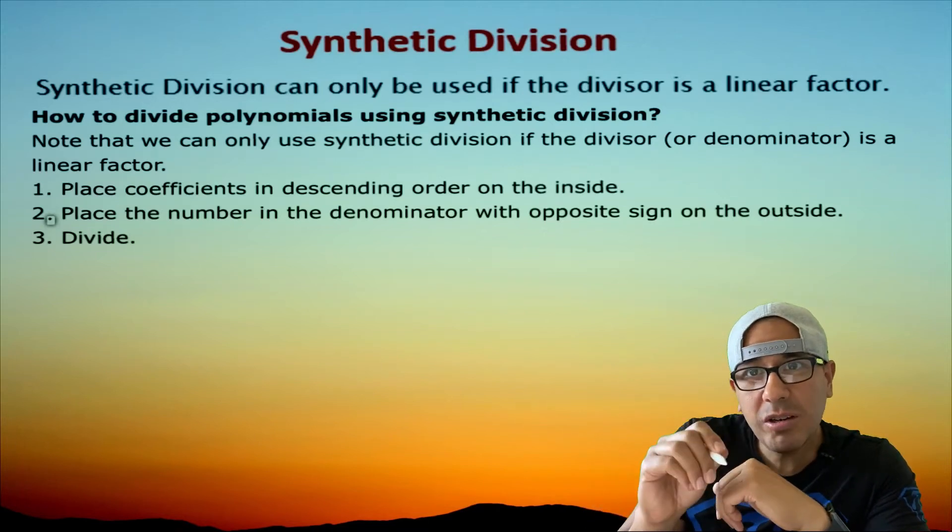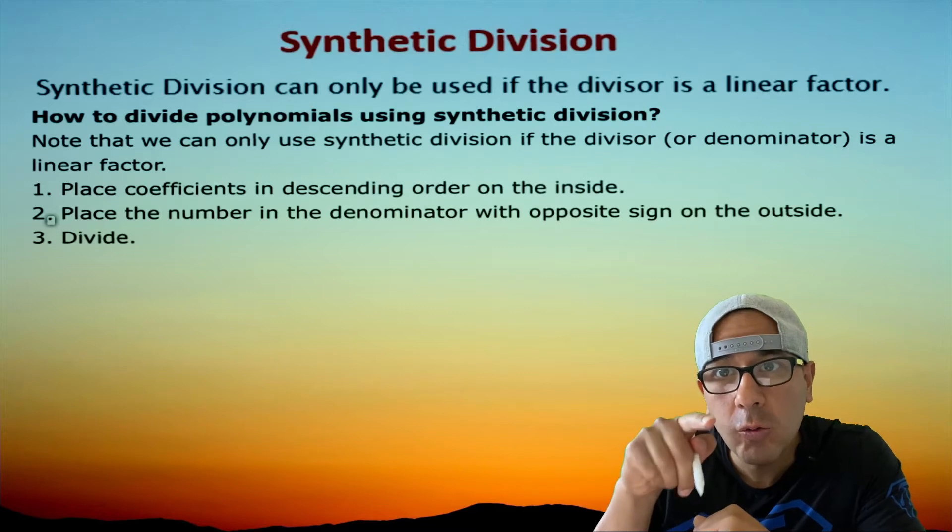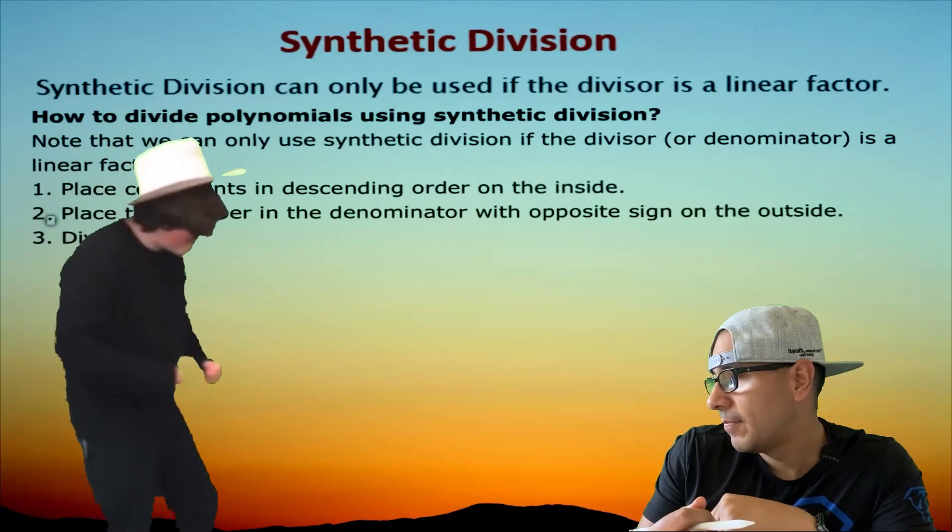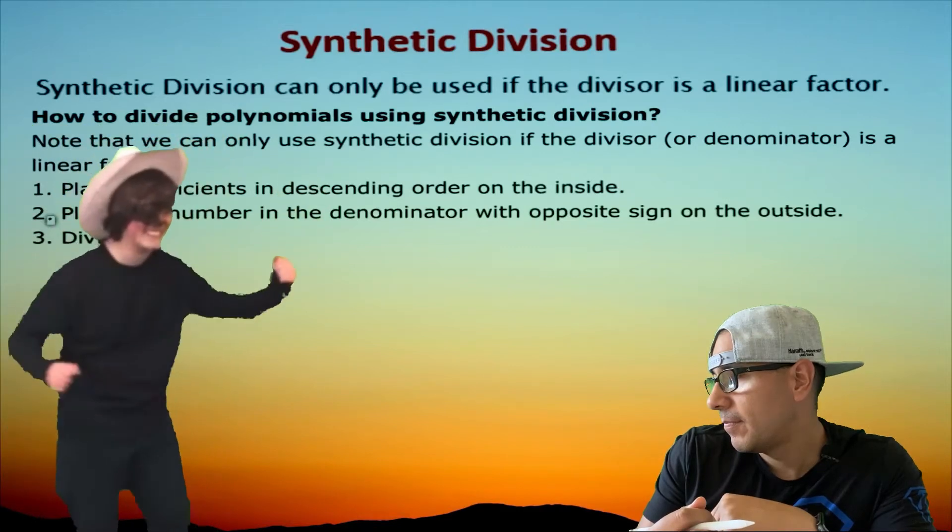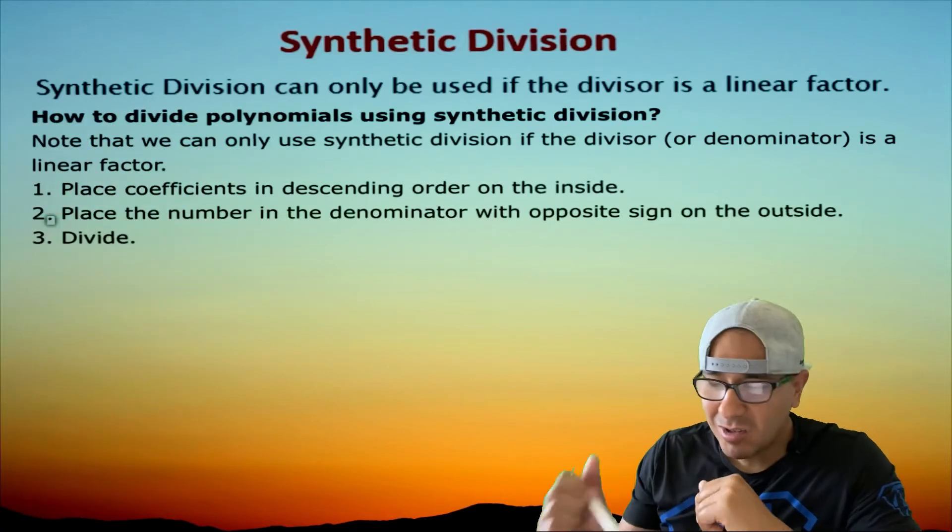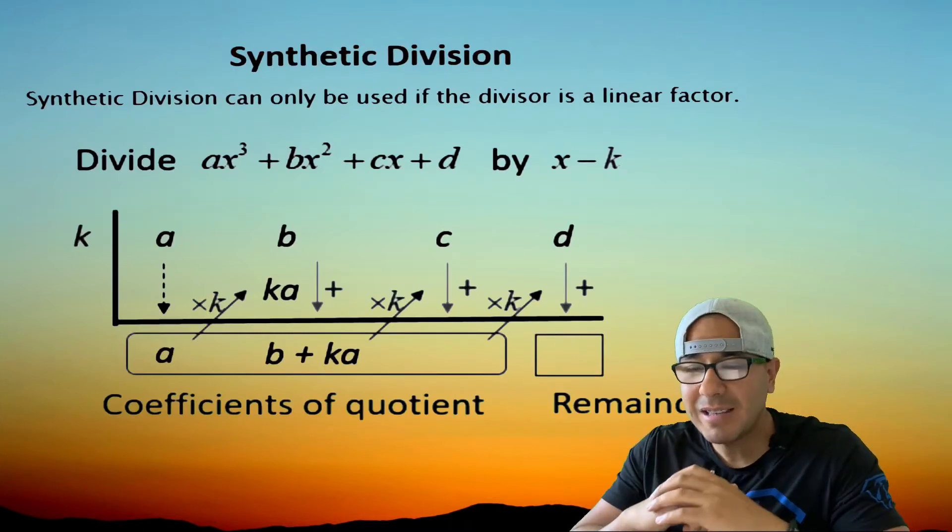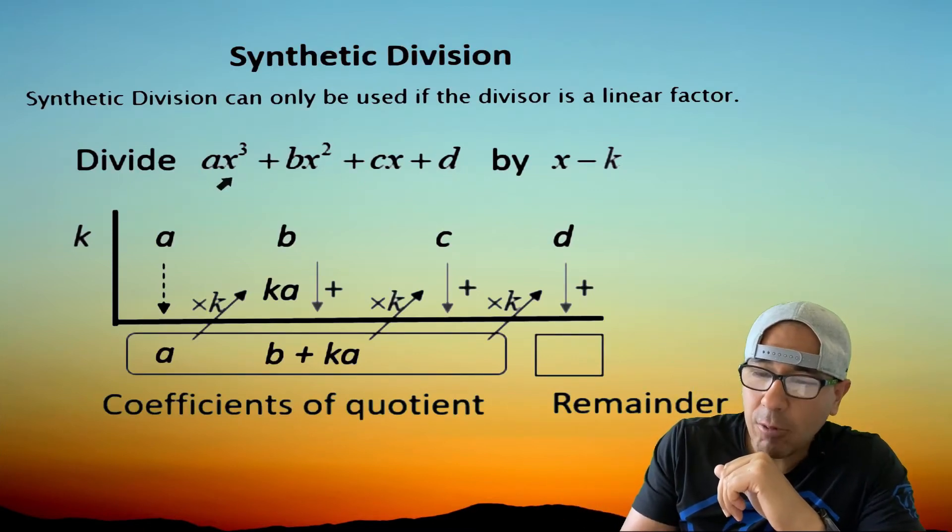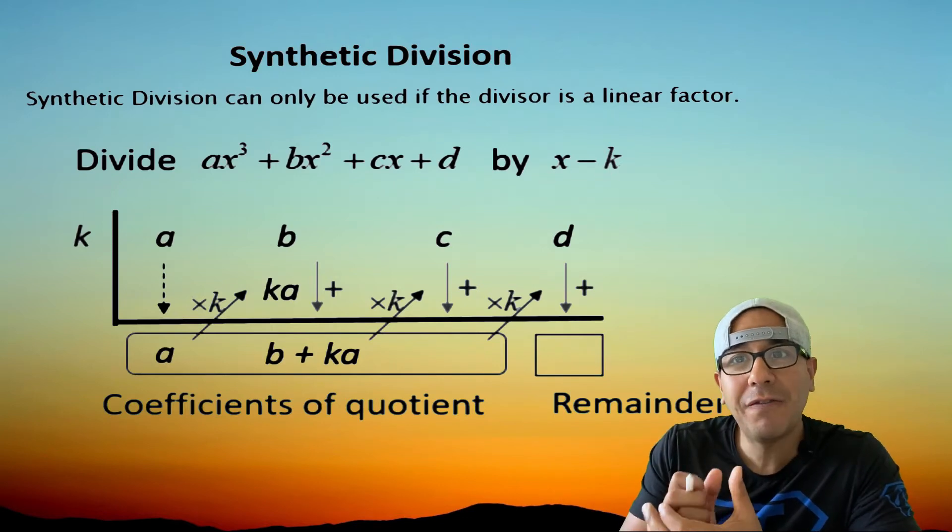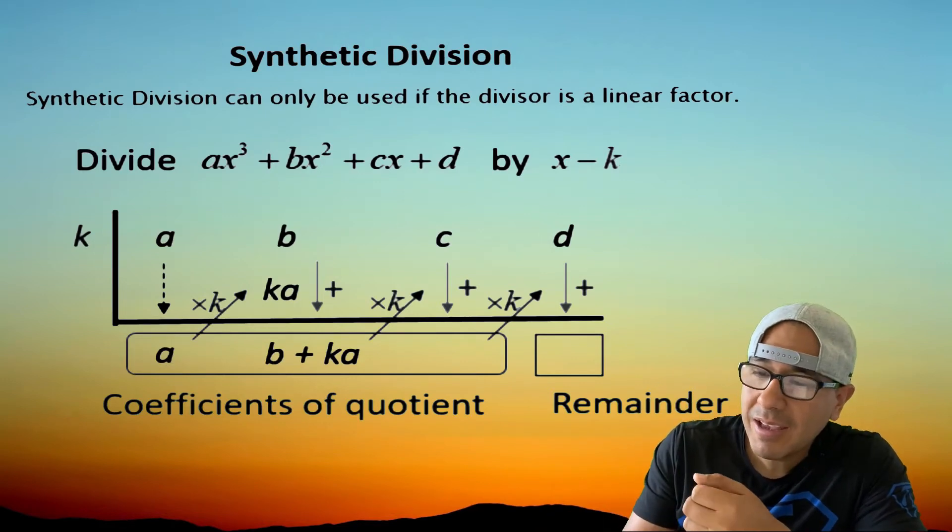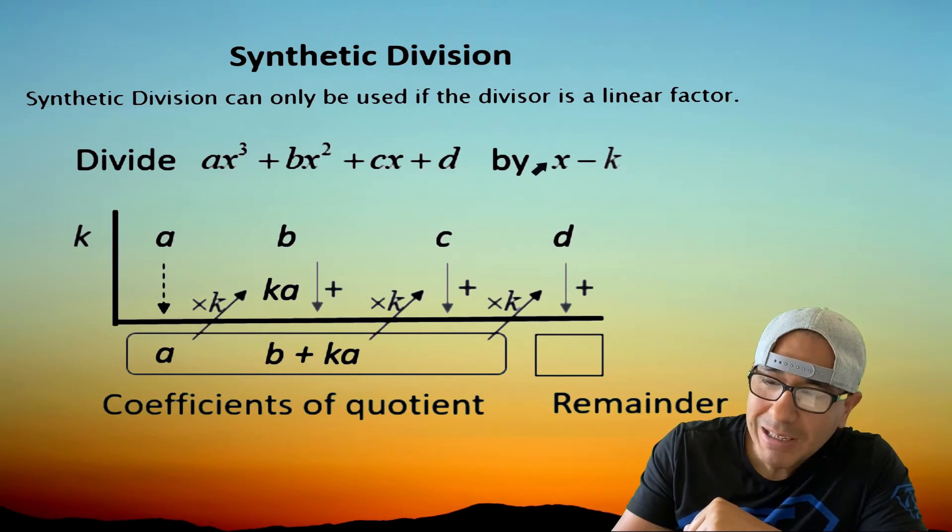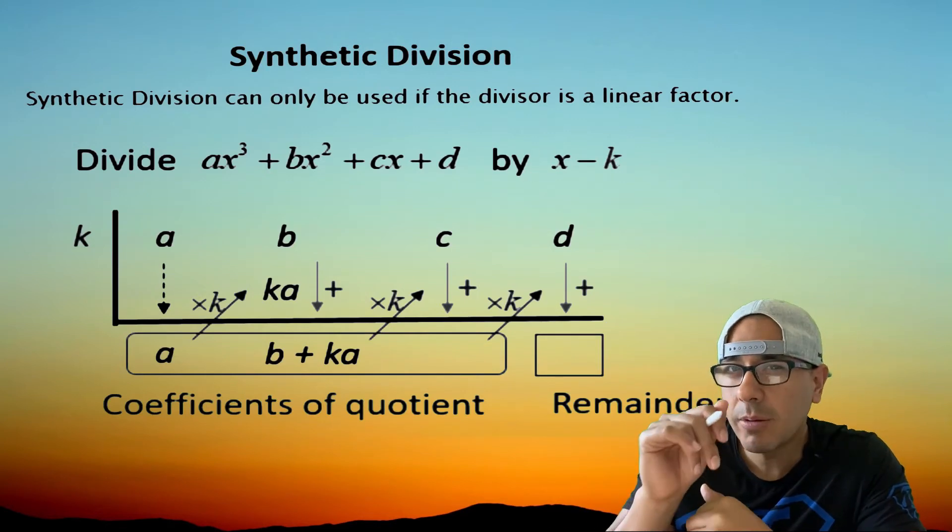And then what I want you to do is translate this into your own words so it makes sense to you, not Jose over there. Alright, and then we're going to divide. So let's check this out. So here's what it looks like. Let's pretend we have this polynomial here and we're going to divide it by x minus k, which is a linear factor. I'm going to say this over and over again. This has to be a linear factor. And check this out, my coefficient here, my leading coefficient, is a one.